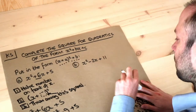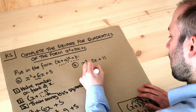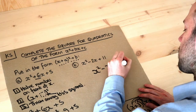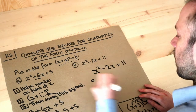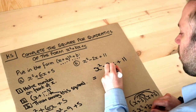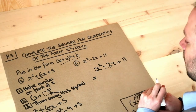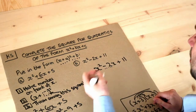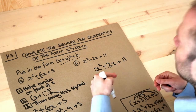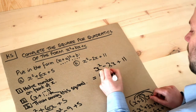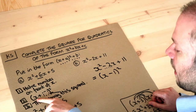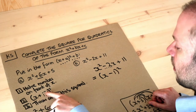Let's do one more. We've got x squared minus 2x plus 11. As before, we halve the number in front of the x — half of minus two is minus one. So we write x plus minus one, which is the same as x minus one, all squared.